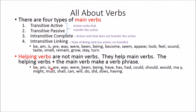The helping verbs are: be, am, is, are, was, were, been, being, have, has, had, could, should, would, may, might, must, shall, can, will, do, did, does, and having. You know these by heart — many of you still remember the song you memorized. Some of them overlap with the linking verbs, but remember, helping verbs are only helping verbs if they're together with a main verb.